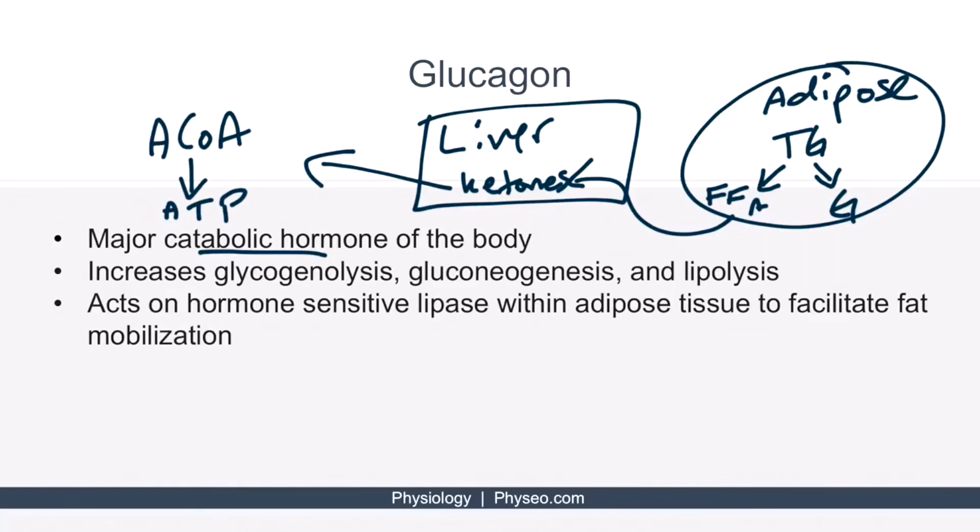So going back to your text, glucagon increases glycogenolysis, gluconeogenesis, and lipolysis, and it acts on the hormone-sensitive lipase within adipose tissue, which facilitates the mobilization of fat.